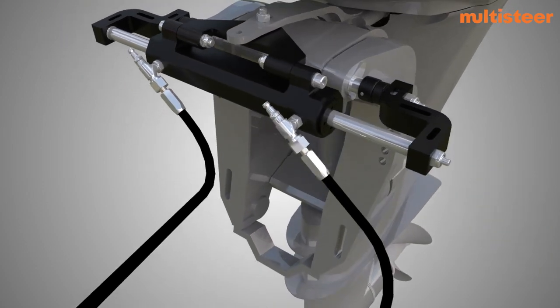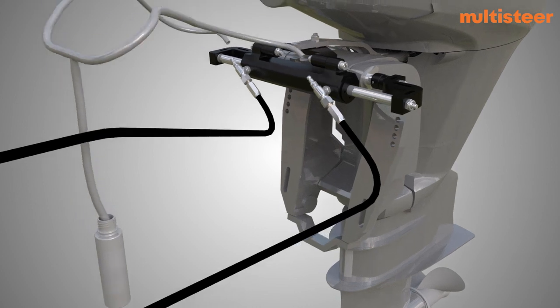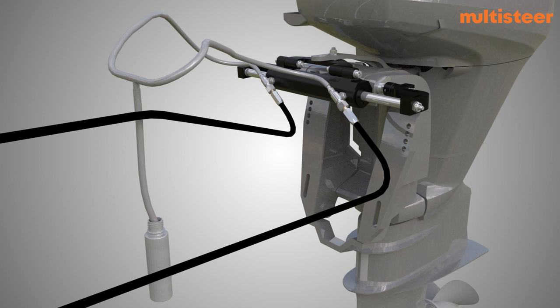Remove the protector cap of both the air bleeders. Insert the smaller pipe supplied with the cylinder into the air bleeders for collecting the oil coming out from the air bleeders during the purging process.